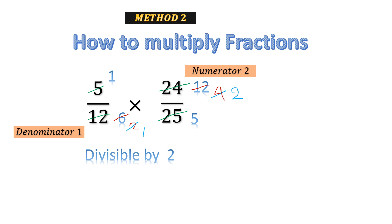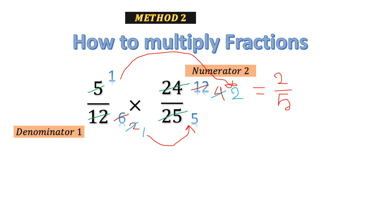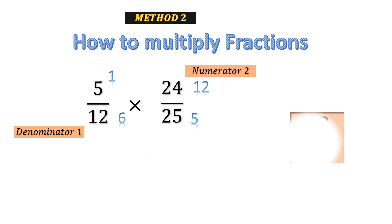Now we are going to do the multiplication: numerator with numerator. 1 multiplied by 2 gives 2 in the numerator. Denominator with denominator: 1 multiplied by 5 gives 5 in the denominator. Hence our answer is again 2 over 5, reached by a different method.